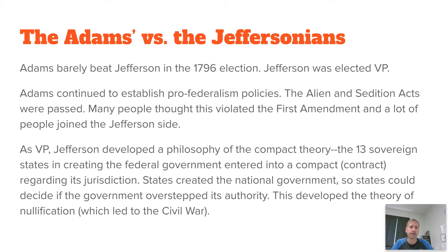It was not like everybody loved the Constitution and what the federal government was doing — it was a bitterly contested race. And because we didn't have the 12th Amendment yet, Thomas Jefferson became John Adams' vice president, which didn't help things. John Adams continued on with his federalist ways. One thing that was passed in Congress and signed by Adams was the Alien and Sedition Acts, which basically set punishments for making false statements about the government — which strengthened Thomas Jefferson's camp even more.